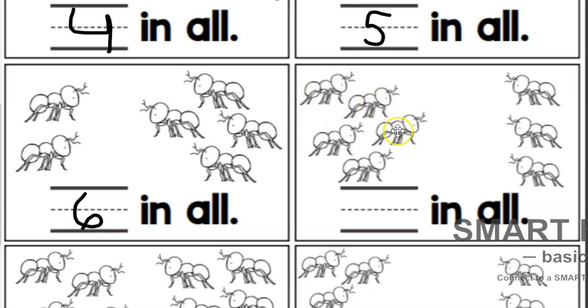All right, there is one, two, three, four, five on this side and one, two, three on this side. Cruz, what did you get for this one? Eight. Good job, there are eight ants in all on that one.